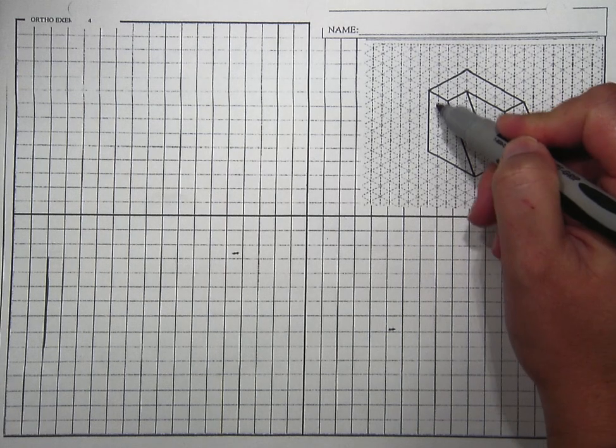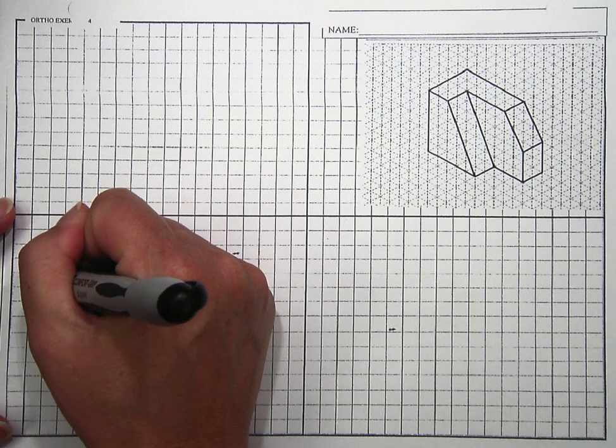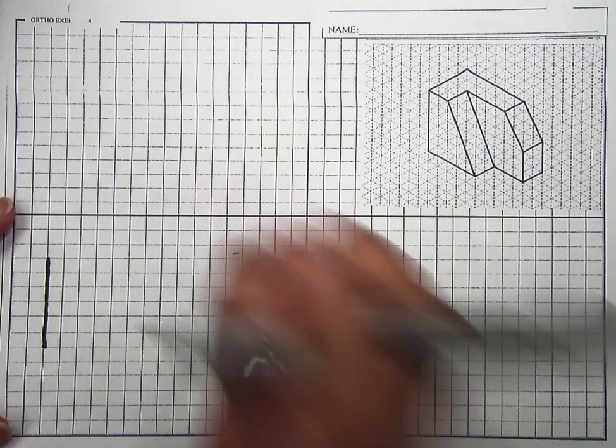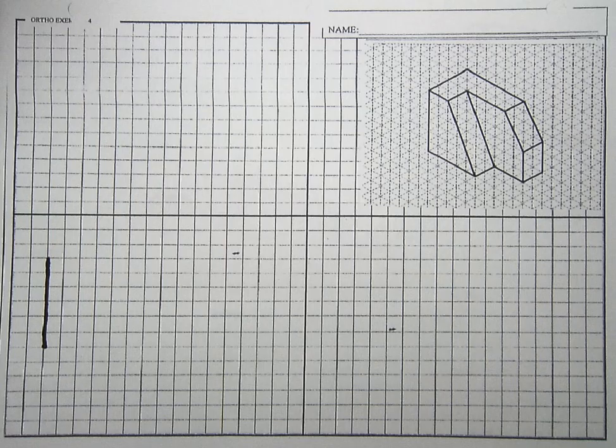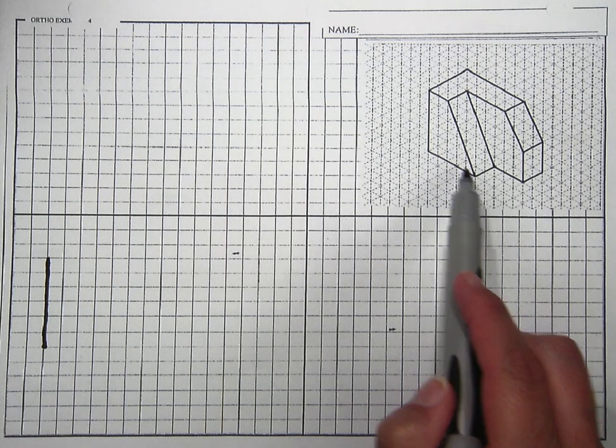So then I'm going to count 1, 2, 3, 4, 5, 6 over here 2, 4, 6 and then I'm going to count over 1, 2, 3, 4, 5.